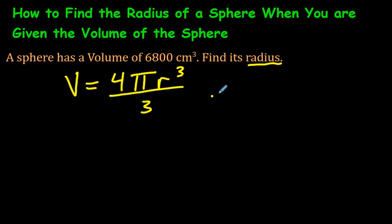Well, here's what you would do. We have a situation where we have a sphere with a volume of 6800 cubic centimeters. I will write the 6800 right here. Over here we have 4 pi r cubed over 3.